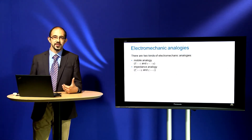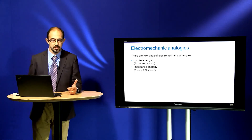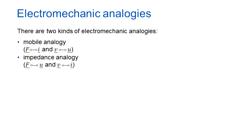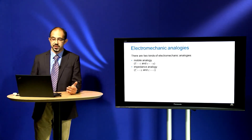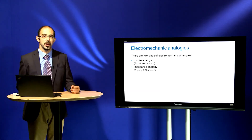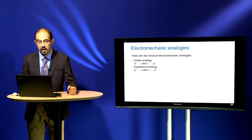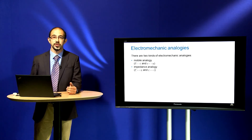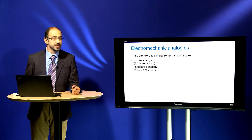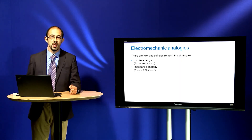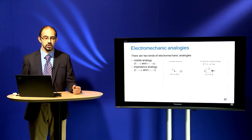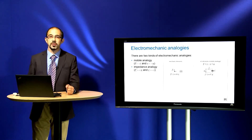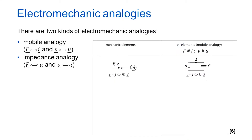If we want to unify these elements, we have two different analogies. One of them is the mobile analogy; the second one is the impedance analogy. In some literature, mobile analogy is also called the admittance or inverse analogy. In the mobile analogy, force corresponds to the electric current and velocity corresponds to the voltage, whereas in the impedance analogy, force corresponds to the voltage and velocity corresponds to the current. In this lecture, I will focus on the mobile analogy. Starting with the first mechanical element, mass — mass corresponds in the mobile analogy to the electric element capacitor.